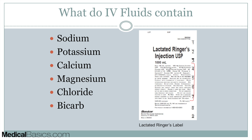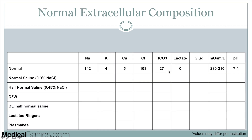I think it is a good idea to have a general approach and then use this as a reference. The first thing we're going to do is look at what is the normal extracellular composition — what does our blood actually look like? The three components that really make up why we use each of the different types of IV fluids are going to be sodium, osmolality, and pH. Just take note of what the normal sodium value, normal osmolality, and normal pH are.